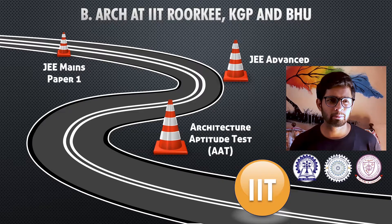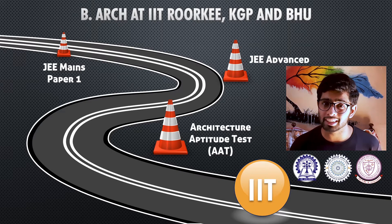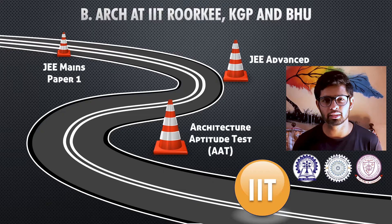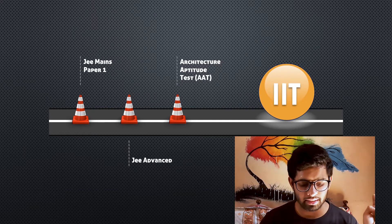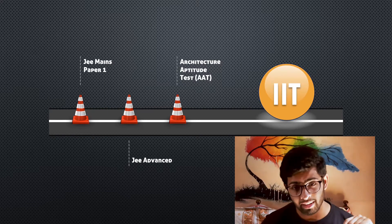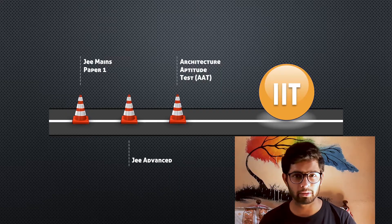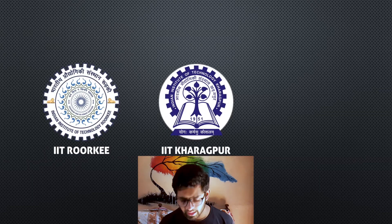AAT is a very simple test. If you want to know more about this test, I will make another video — just mention it in the comments below. To conclude, there are three exams you need to give to get into IITs: first is JEE Main Paper 1, then JEE Advanced, and then AAT. AAT is just a qualifying test — its rank doesn't get counted. So at admission time, only your JEE Advanced rank matters, across the three IITs: IIT Roorkee, IIT Kharagpur, and IIT BHU.